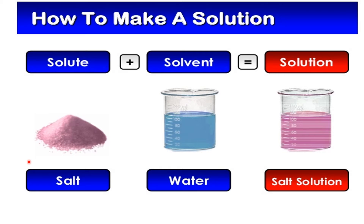Here you can see how to make a solution. You need a solute — a substance that will dissolve in a liquid — and a solvent, which is the liquid that dissolves the solute. Salt is a solute, water is a solvent, and when we mix these two it forms a salt solution. For example, if you are making Tang juice, the powdered Tang is the solute, the water is the solvent, and after mixing solute and solvent you get Tang juice, which is a solution.